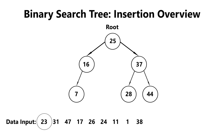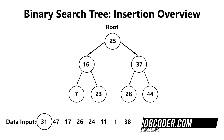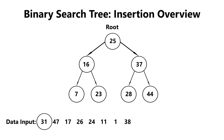After that, let's move on to 23. 23 is less than 25, so we go left. 23 is greater than 16, so now we insert right. 31 is greater than 25, so we go right. 31 is less than 37, so we go left. And finally, 31 is greater than 28, so it becomes the right child of 28.